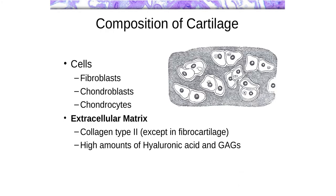In this video we're going to talk about cartilage and the histology of cartilage. I'm going to start by describing some of the components of the tissue — specifically cells and the matrix. Under cells I have listed fibroblasts, chondroblasts, and chondrocytes. Fibroblasts are part of the connective tissue that surrounds the cartilage, so they're not really cartilage-specific. What we're going to focus on are chondroblasts and chondrocytes.